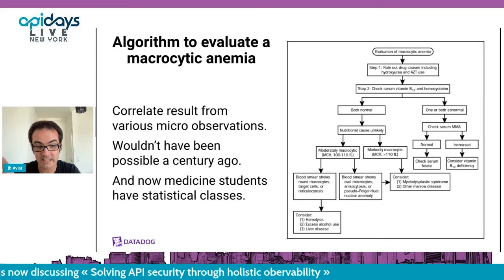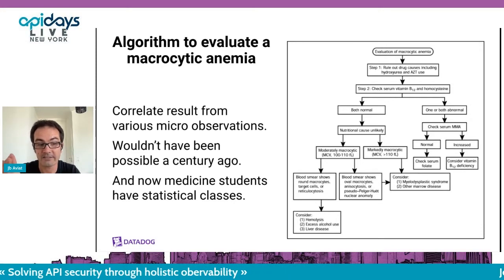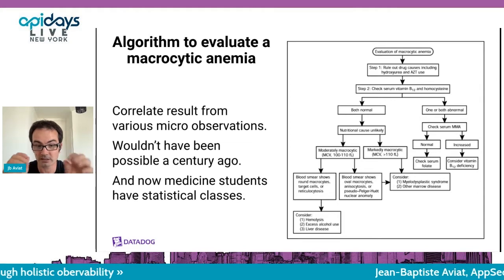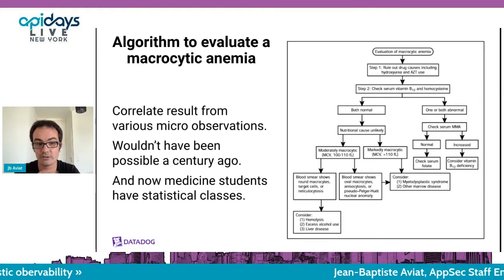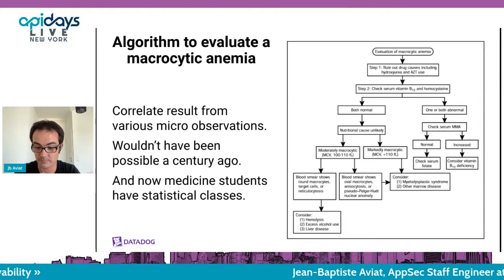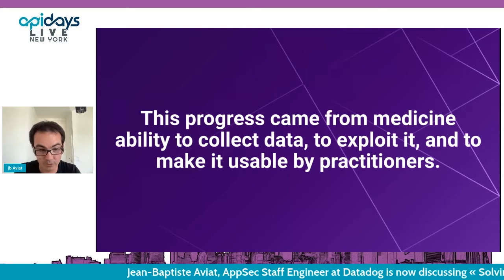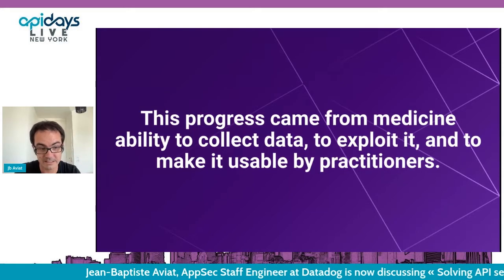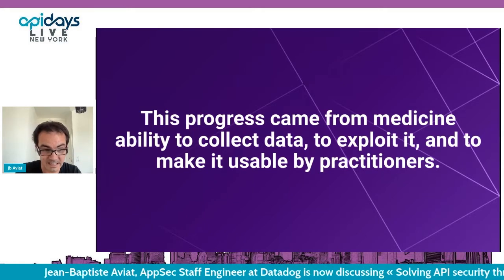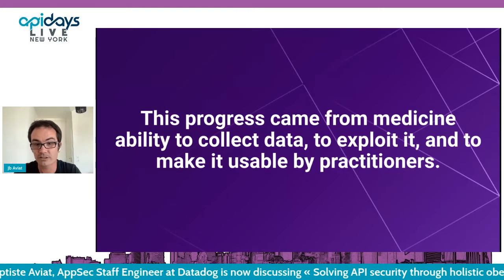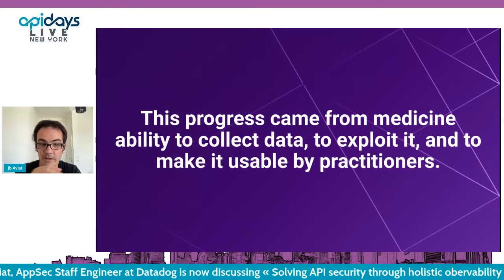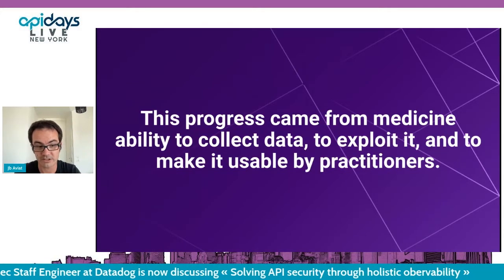Thanks to the compound of tooling, algorithms, and practitioners' knowledge, we can improve life expectancy. Today, medicine students all have statistics classes because that's a very important part of how you practice medicine. This progress came from two things: the ability to collect data, to exploit it, and to make it actionable by practitioners.